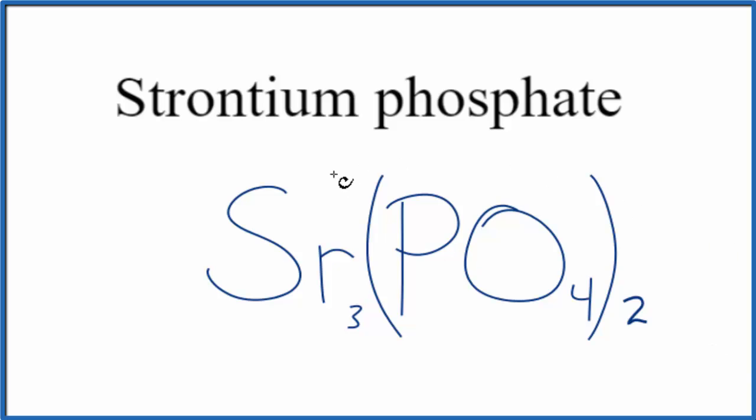But let's check our work. We said strontium group 2 was 2+, and this whole phosphate ion here, 3-. 2 times 3- gives us 6-. 3 times 2+ is 6+. These two numbers add up to 0, give us a net charge of 0.